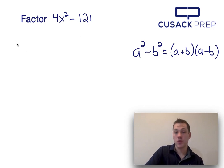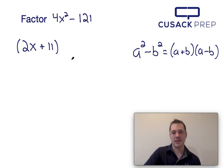So a would be the square root of 4x squared, which is 2x, and b would be the square root of 121, which is 11.